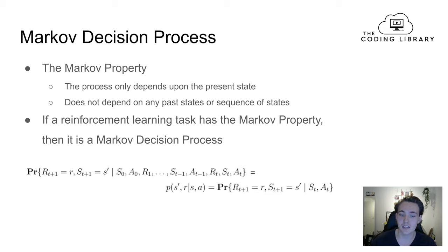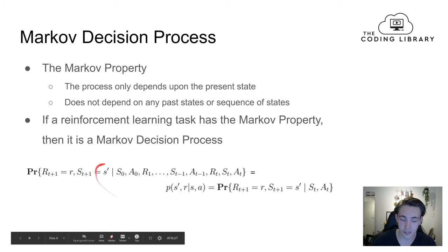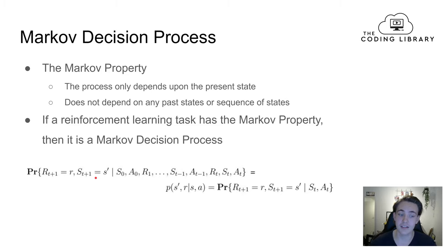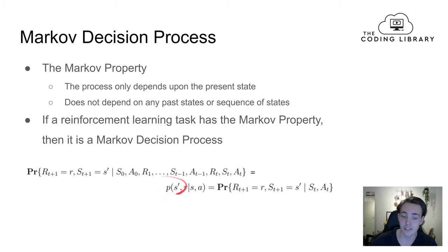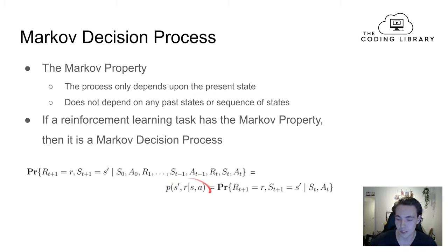If a reinforcement learning task has the Markov property then it is a Markov decision process. We have this probability formulation where we can compute the probability of some reward and some next state at the next time step, given the current state and action taken. This gives us the Markov decision process mathematical formulation: the probability of the next state and reward given a current state and action taken at this time step.